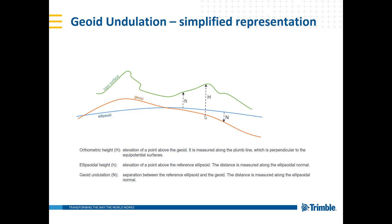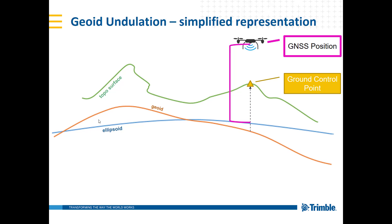Then we have ellipsoidal heights, meaning the height is based on this ellipsoid line. This height has no relation to our topographic surface — it is purely based on the general ellipsoidal height.